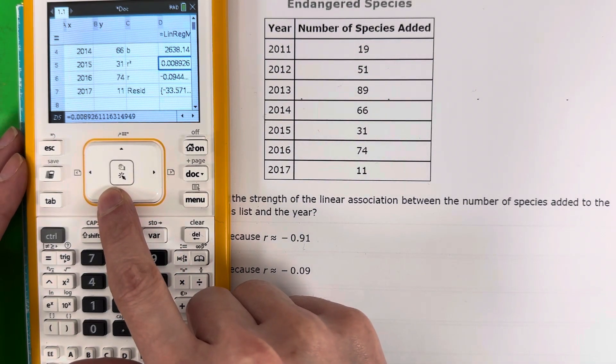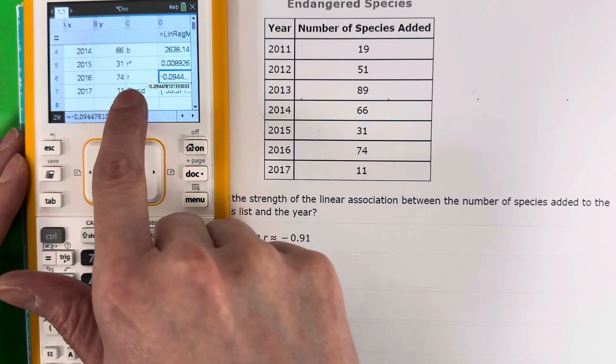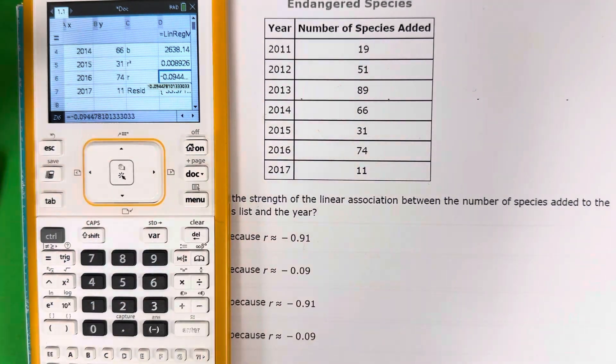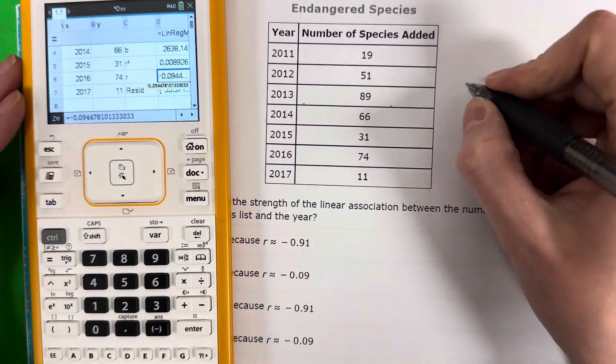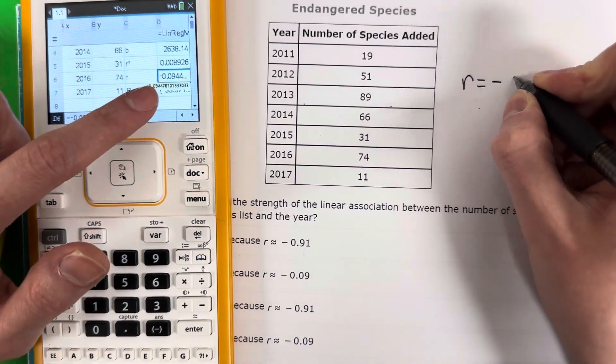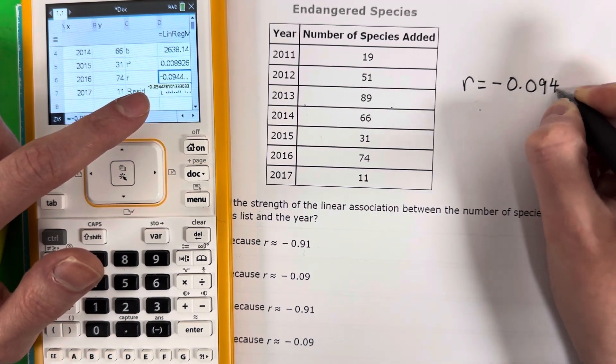Go ahead and go down. Do you see here, I have an R? Okay, not R squared, R. Okay, make sure it's not R squared. So what is my R? Let's go ahead and write that down. R is negative 0.0944.